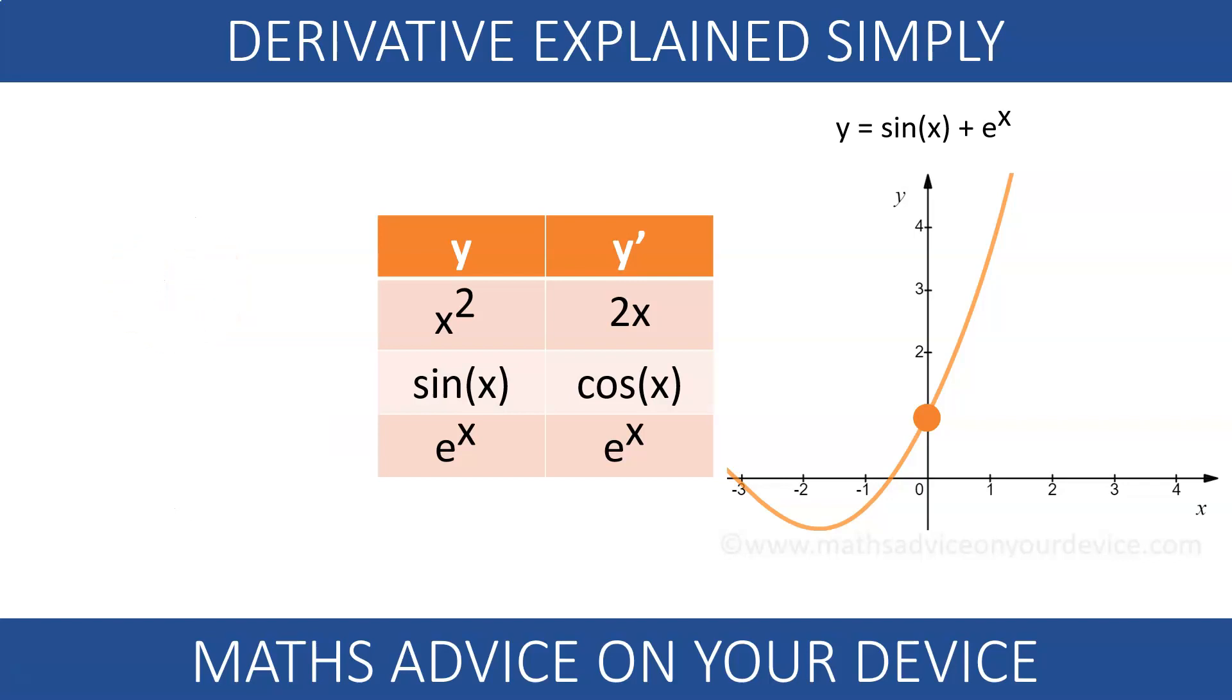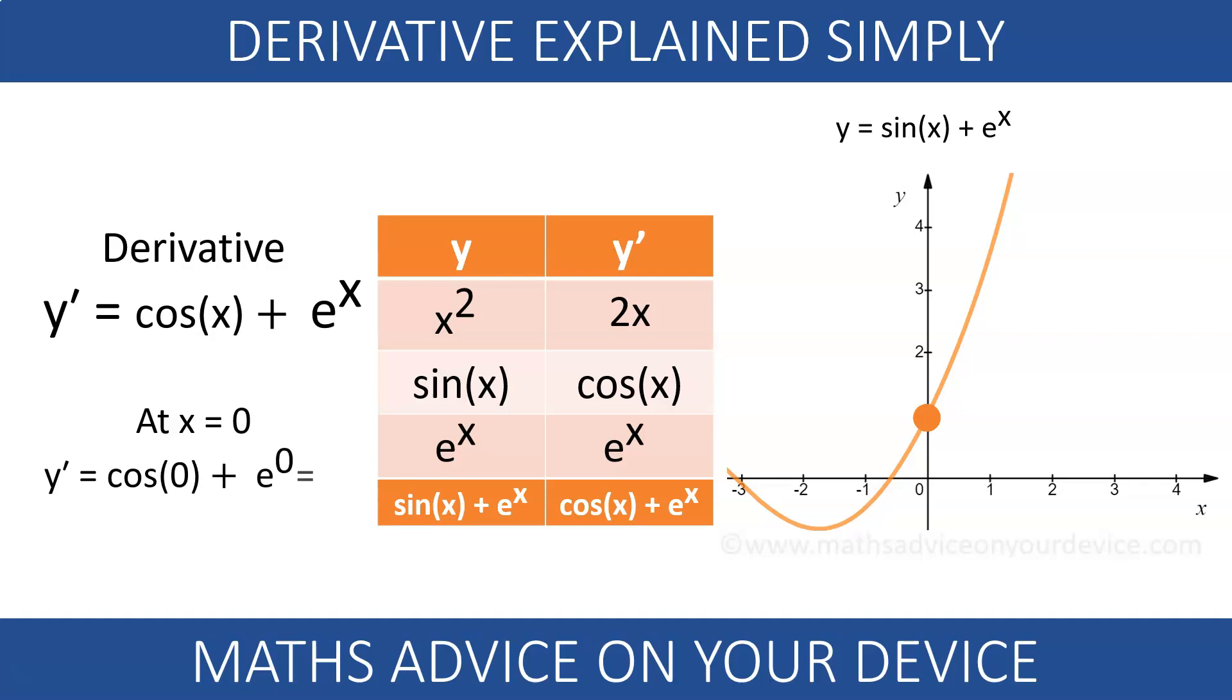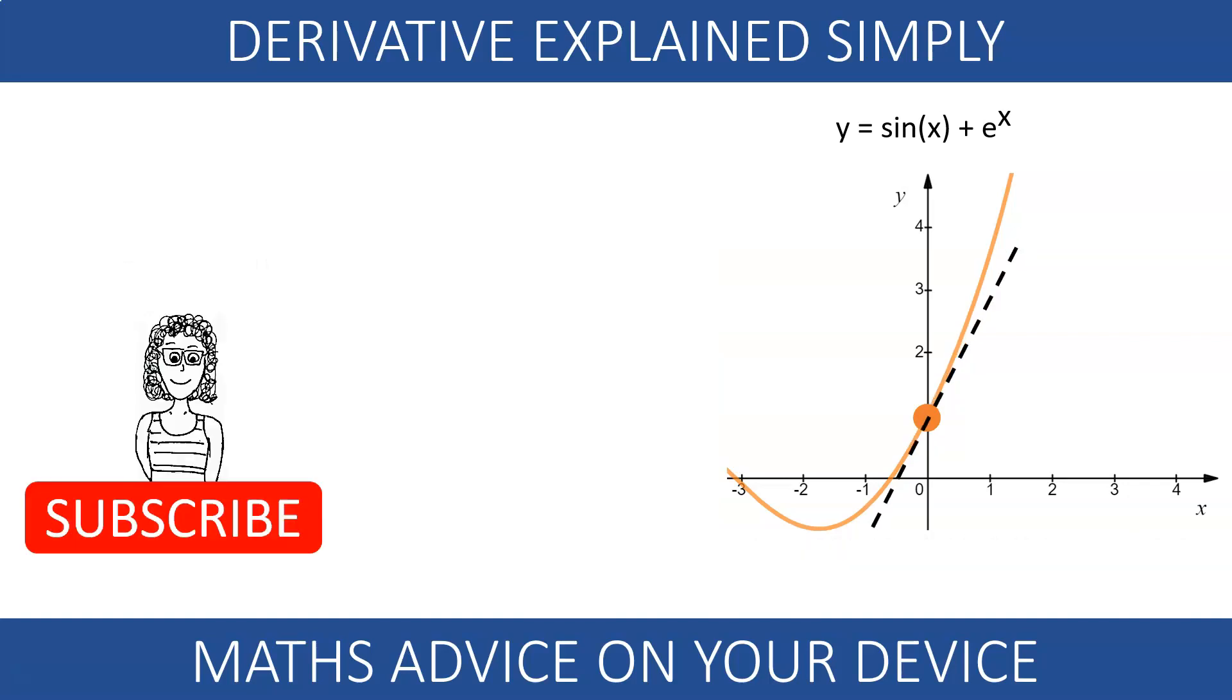The derivative of sin x plus e to the x is cosine x plus e to the x. At x equals 0, it takes a value of 2, the gradient of the tangent to the curve at x equals 0.